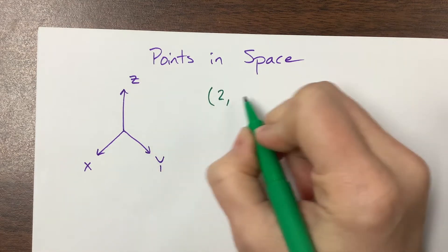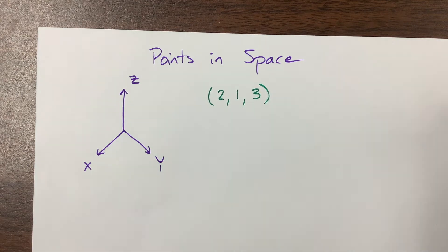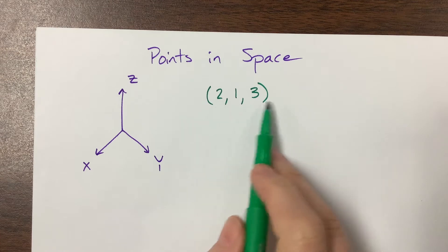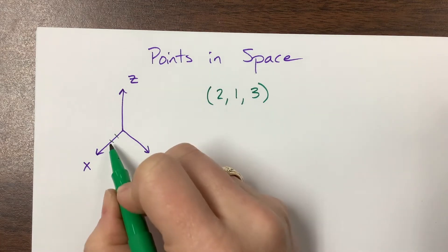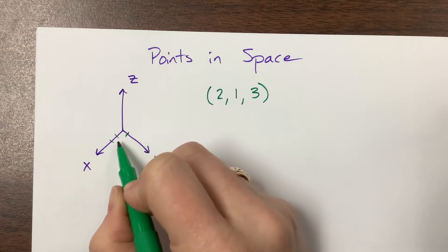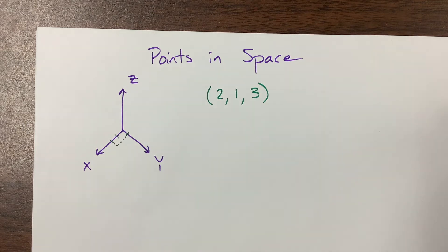So let's say I have the point (2, 1, 3). Then what I need to do, this is the x, the y, the z, so I'm going to come out two units in the x and then one unit in the y. And we're going to draw a lot of, basically we're going to draw a rectangular prism.